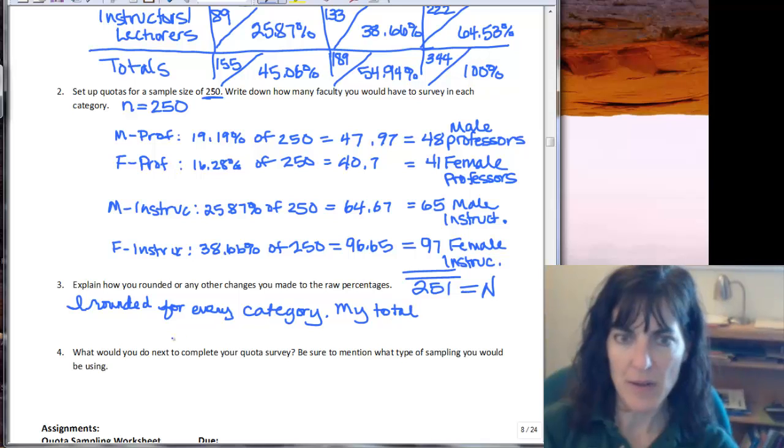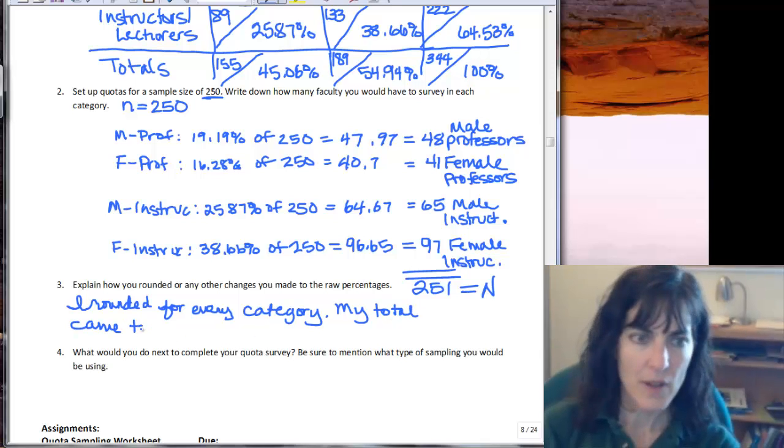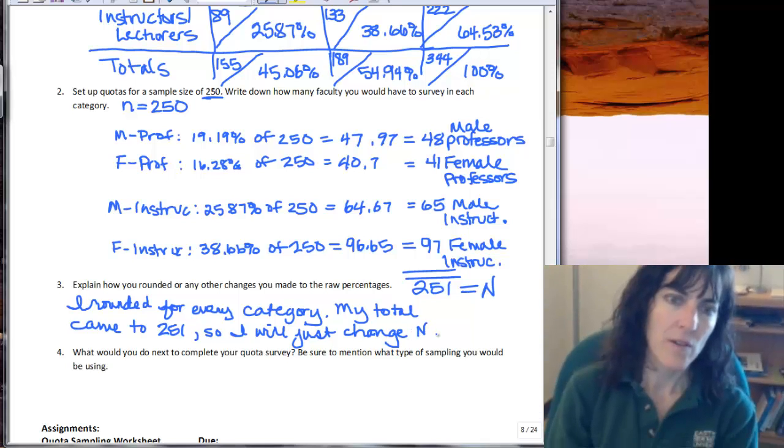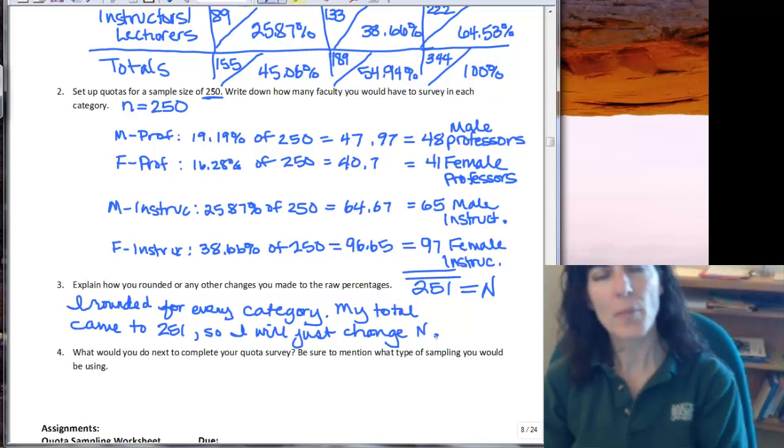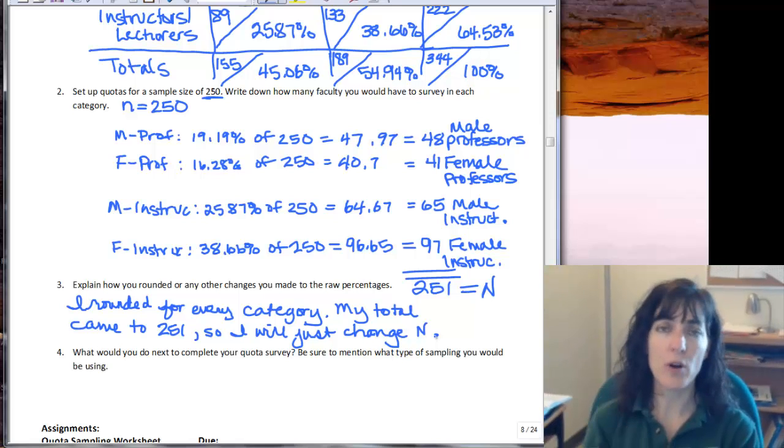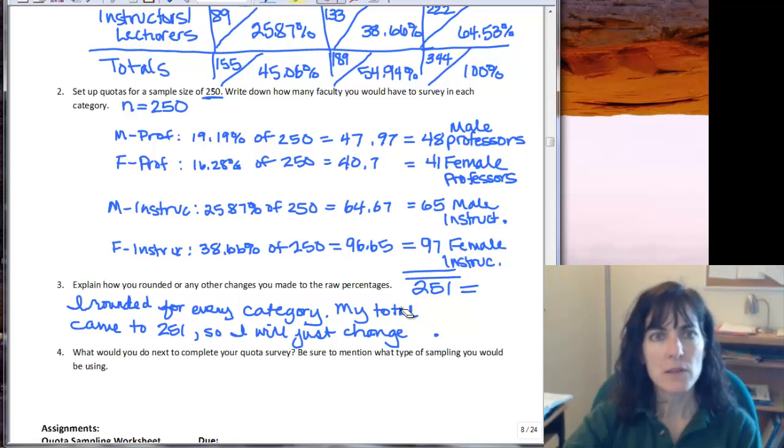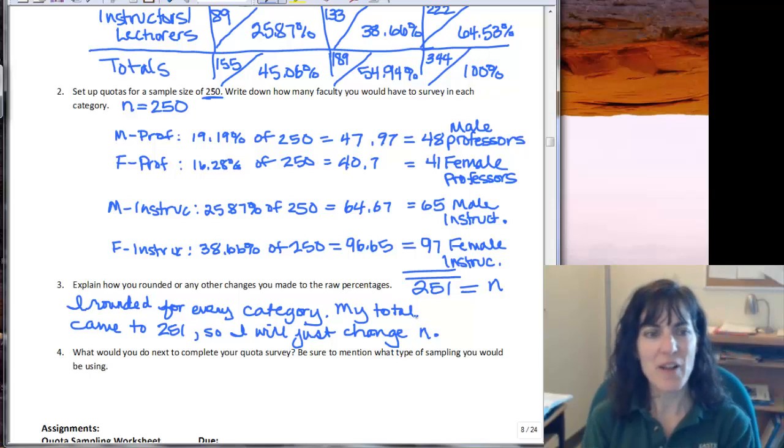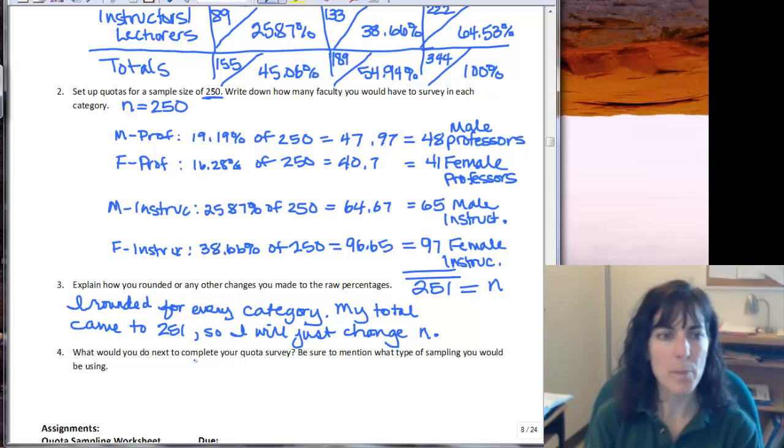So what I've done here, I'll say I rounded for every category and my total came to 251, so I will just change big N. And that's pretty common for you to be like one off or something like that, so we'll just bump up our N to 251. Little N is your sample, big N is your population. We're talking about little N here. So I'll just change my little N, my sample size, I'll just modify by one, it's not a problem.